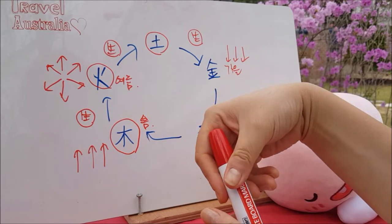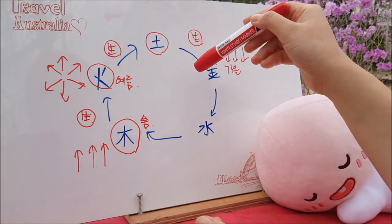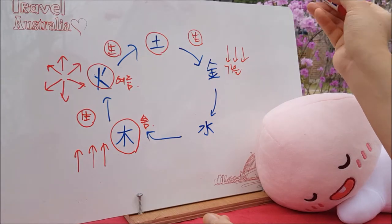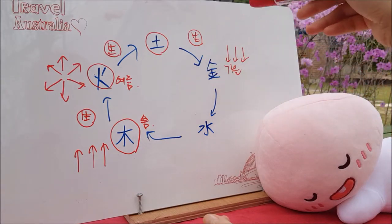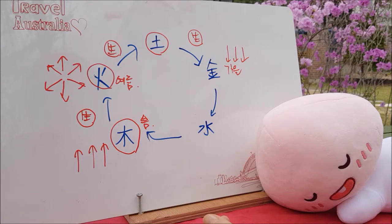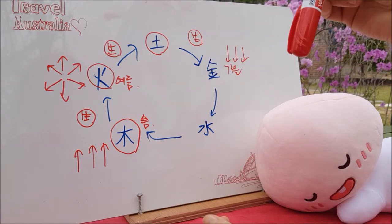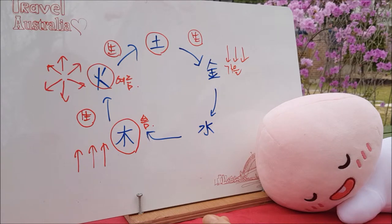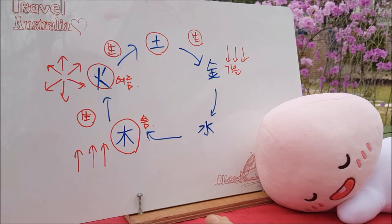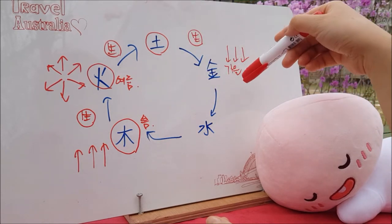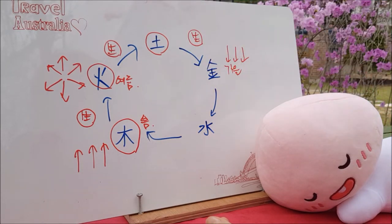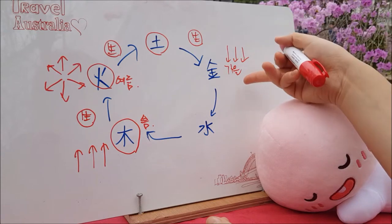가을을 뜻하는 색깔은 제가 들고 있는 이 펜의 흰색 부분에 해당이 되고, 이 칠판도 지금 화이트보드이기 때문에 흰색인데요. 가을이 왜, 금이 왜 흰색일까? 낙엽 색깔을 생각해보시면 울긋불긋한 단풍도 가을의 끝에 다다르면 하얗게 색소가 빠져요. 저희 사람도 젊었을 때는 검은 머리, 노란 머리 여러 가지 색깔이 있겠지만, 젊은 시기가 끝나고 나면 희끗희끗해져요. 머리카락이 멜라닌 색소가 빠져서, 그래서 가을을 뜻하는 색깔은 흰색입니다.